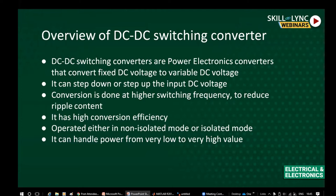Since there is no heat dissipation during switching on and off, whereas in a linear converter there is a resistance drop which creates high losses in the resistance, the conversion efficiency in the case of a switching converter is higher. It can also be operated in either a non-isolated manner or an isolated manner. In non-isolated mode, there is an electrical connection between the input DC and the output DC, meaning the load is directly connected to the input DC through an electrical connection.